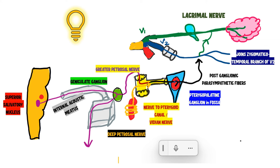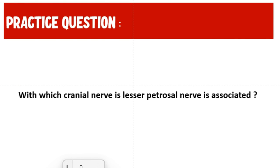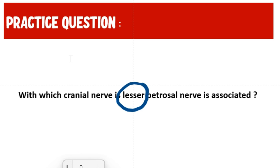Now that we have completed the topic, let us revisit our question. The answer to which of the following is not a component of the parasympathetic supply to the lacrimal gland is the inferior salivatory nucleus. Before parting, another question: with which cranial nerve is the lesser petrosal nerve associated? Tell your answers in the comment section — one randomly chosen answer gets a shout out in the next video. That was all for today — thank you and have a nice day.